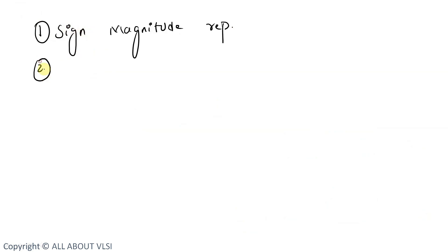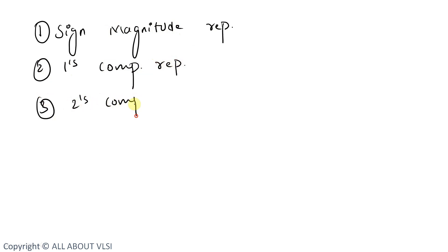Now let's look at how to represent numbers. For representing any number, we have three types of representations: sign-magnitude representation, 1's complement representation, and 2's complement representation. Let's understand each one.